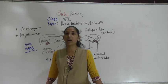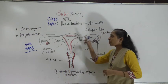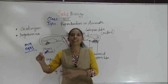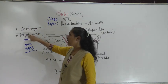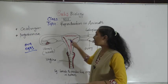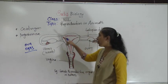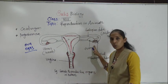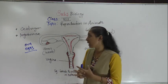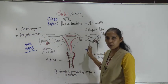The ova or eggs are produced in the ovaries. Additionally, the ovaries also help to secrete hormones like estrogen and progesterone. So the ovaries have two main functions: producing female gametes (ova or eggs) and secreting hormones.